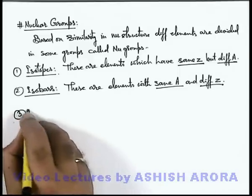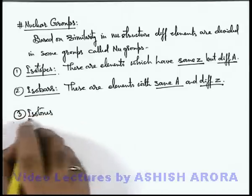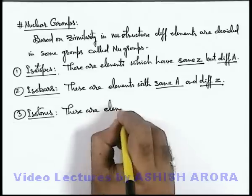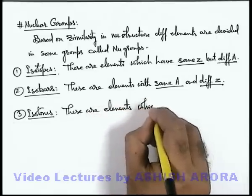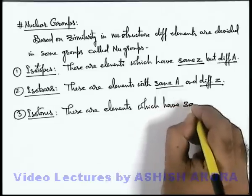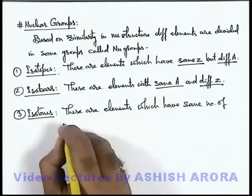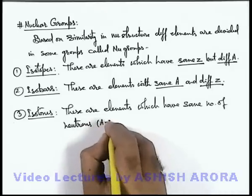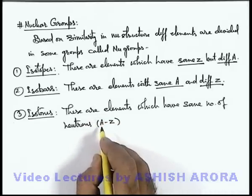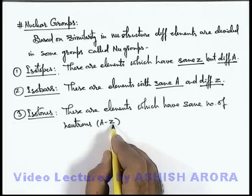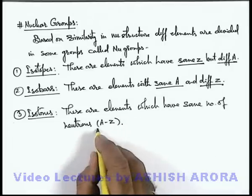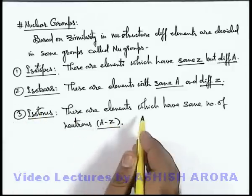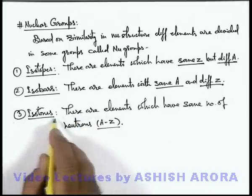The third one is isotones. These are elements which have the same number of neutrons. The number of neutrons is A minus Z, because A is the number of neutrons plus the number of protons, and Z is the number of protons. Those elements which have the same number of neutrons will have similar physical properties which are dependent on the total number of neutrons, and such all elements are called isotones.